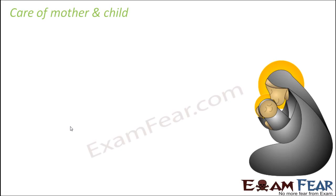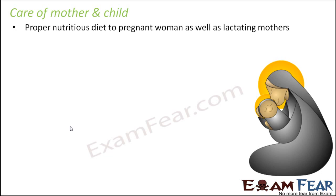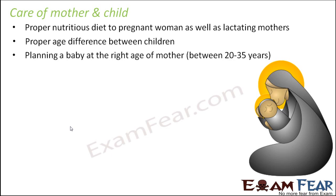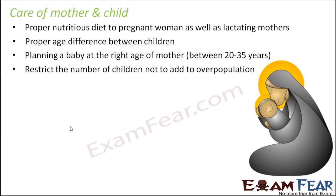One scenario is if you are giving birth to a baby — if you are pregnant — it is extremely important to take care of the mother and the child. Proper nutritious diet should be given to pregnant women as well as lactating mothers, because it is not only them who need a proper diet but also the baby who is dependent on them for nutrition. Proper age difference between children ensures the kid is not deprived of proper care and nutrition. Planning a baby at the right age of the mother is important, and that appropriate age is 20 to 35 years. Restrict the number of children so as not to add to overpopulation, which is why we discussed all the various contraceptive methods.